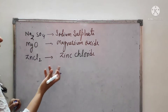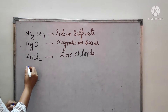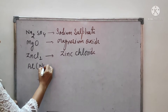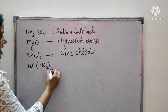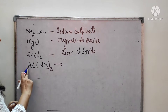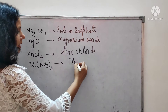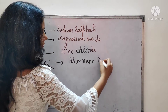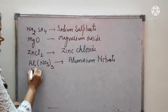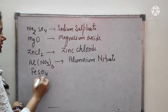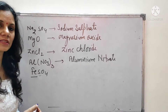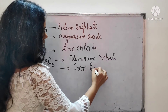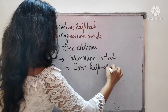Next example: Al(NO3)3 — aluminium with nitrate, so the name is aluminium nitrate. Then FeSO4 — Fe is the symbol for iron, SO4 is sulfate, so its name is iron sulfate. Remember that the first letter of each element symbol should be a capital letter.